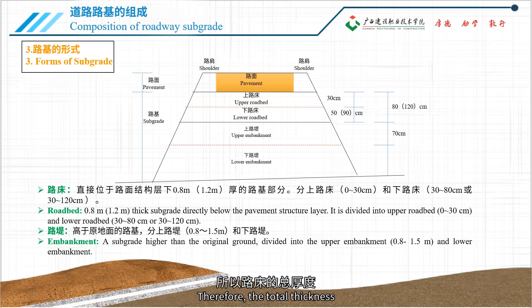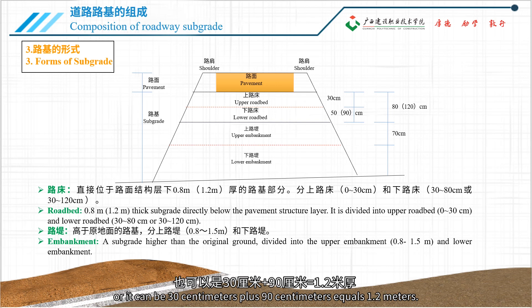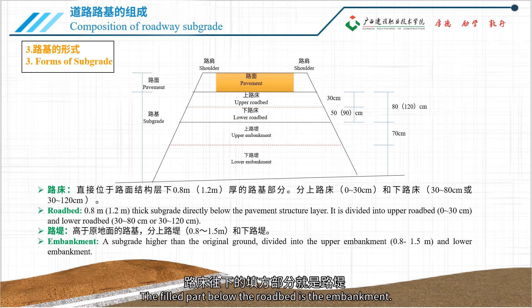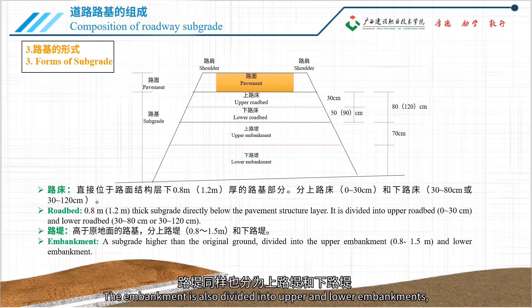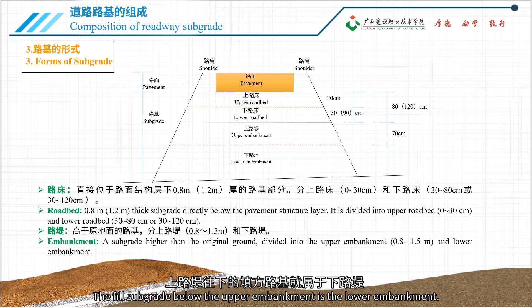Therefore, the total thickness of the roadbed can vary based on different traffic volumes — it can be 30 centimeters plus 50 centimeters, equaling 80 centimeters. The filled part below the roadbed is the embankment, which is also divided into upper and lower embankments, with the upper embankment having a fixed thickness of 70 centimeters. The fill subgrade below the upper embankment is the lower embankment.